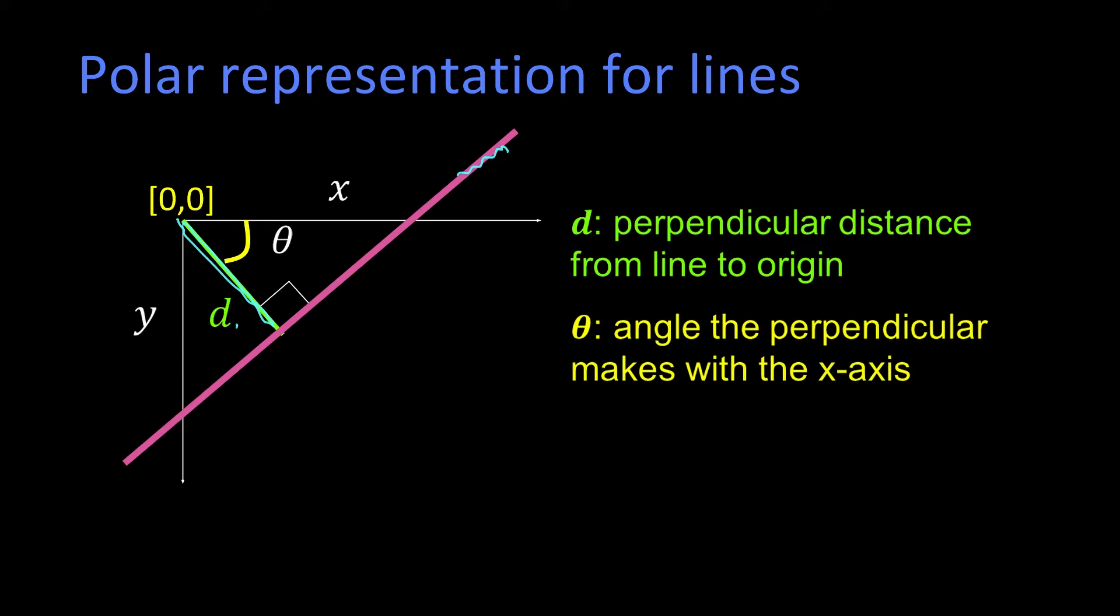The second parameter is theta, which is the angle that this perpendicular makes with the x-axis. Or if you want, you can have it be the angle that the line makes with the axis—doesn't matter. You just have to pick an angle.